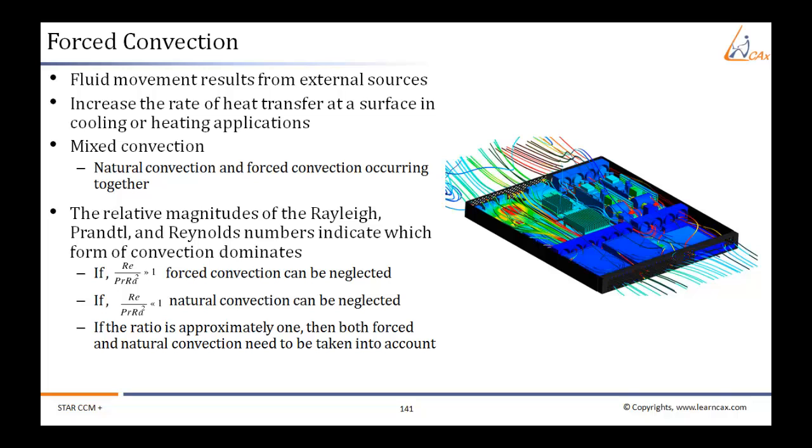...to forced convection and how much is due to natural convection. The relative magnitudes of the Rayleigh, Prandtl, and Reynolds numbers indicate which form of convection dominates.